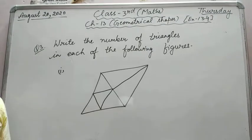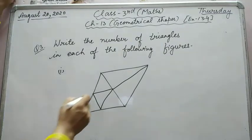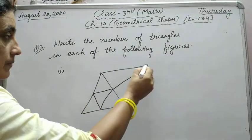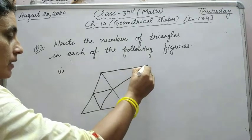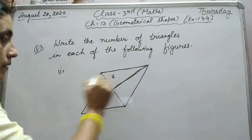Question number third: write the number of triangles in each of the following figures. In this figure, you have to count triangles. Let's see. First, mark here, repeat. This is your first triangle, one. Second triangle, if you see here, one more.